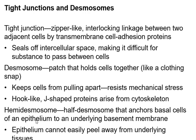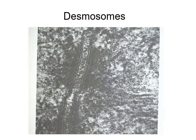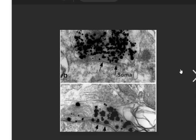A third type of junction is a hemidesmosome. The desmosome was holding two cells together, but a hemidesmosome is one cell holding itself onto the basement membrane. You only have half of it — a hemi-desmosome. Here's a picture: you can see the phospholipid bilayer making up the cell membrane, and the protein is only on one side, attaching to the basement membrane.